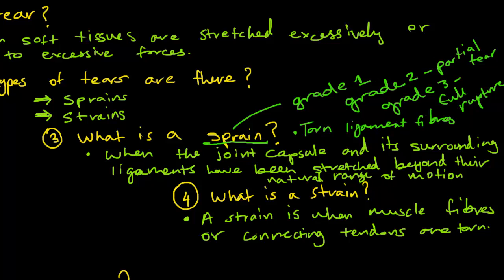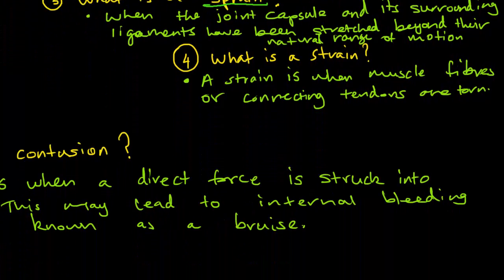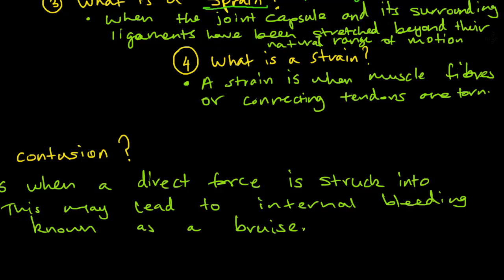I'll tell you about a contusion. Before I even start defining a contusion, I think it's easier for you to know what a contusion is also referred to in everyday life: contusions are bruises. If you think about how bruises occur, they occur through direct forces which are struck onto our body. For example, if I had a cricket ball and it hit me at a fast speed, there's a good chance that a contusion is going to occur. The actual direct definition is that when a direct force is struck onto soft tissue, this may lead to internal bleeding, and it's also known as a bruise.